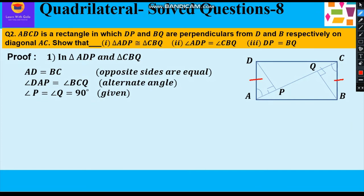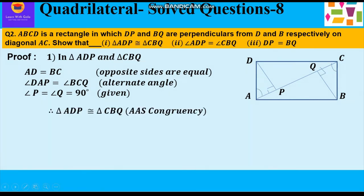Further, angle DAP is equal to angle BCQ. Both are alternate interior angles since the opposite sides are parallel. Further angle P is equal to angle Q that is 90 degree. That is given to us that DP and BQ are perpendicular. So we can say that triangle ADP is congruent to triangle CBQ by AAS congruency.